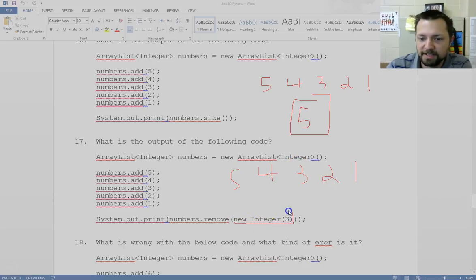Remove new integer 3. This is not an int, so we do the remove that looks for an object. It finds that object at position 2 and kills it. And it would print true. It succeeds in removing that value.